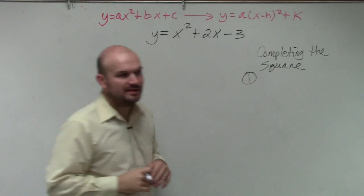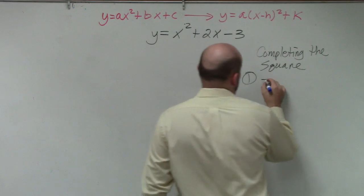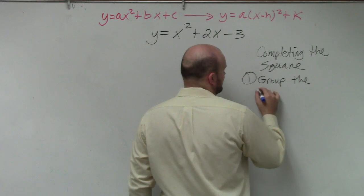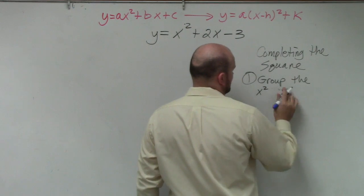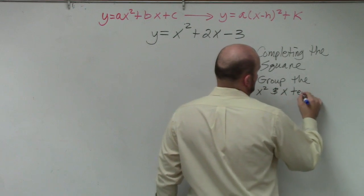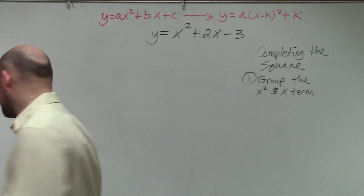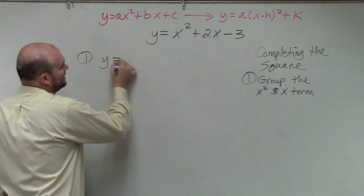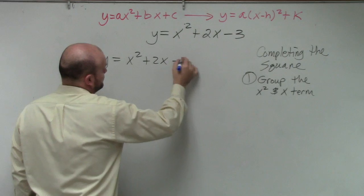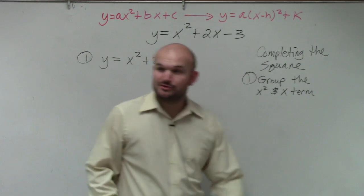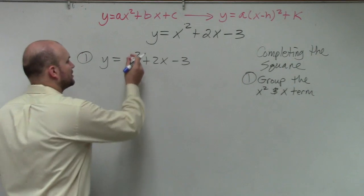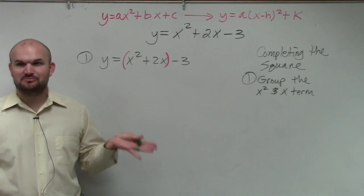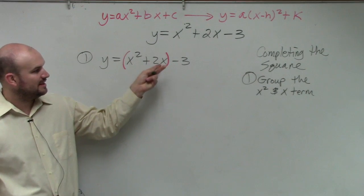I'm going to give you guys the process. Step number one: you're going to group the x² and x term — what we call our quadratic and our linear term. So step number one is grouping the two terms. What you simply do to group is use grouping symbols — parentheses or brackets. We're going to use parentheses.